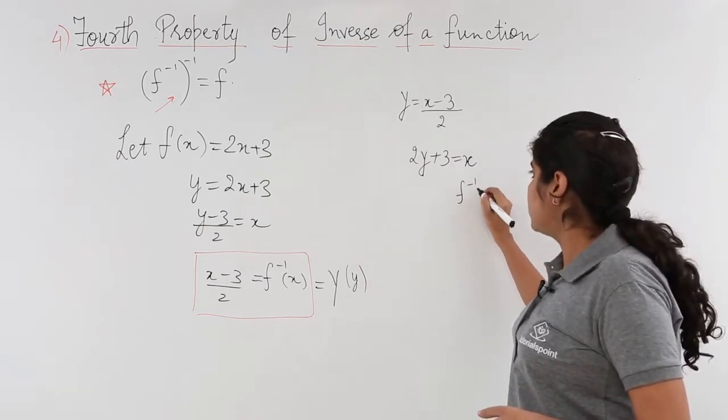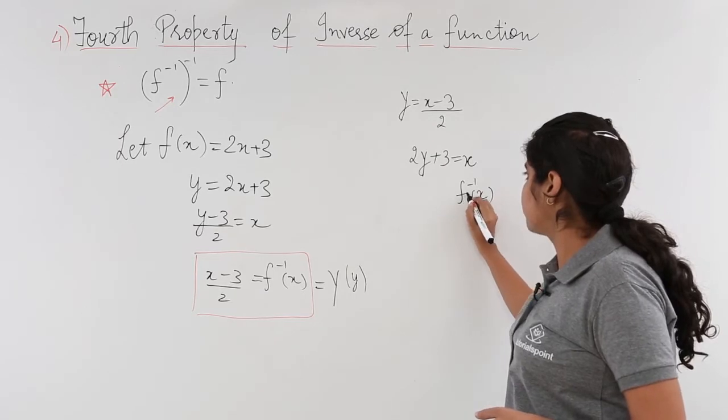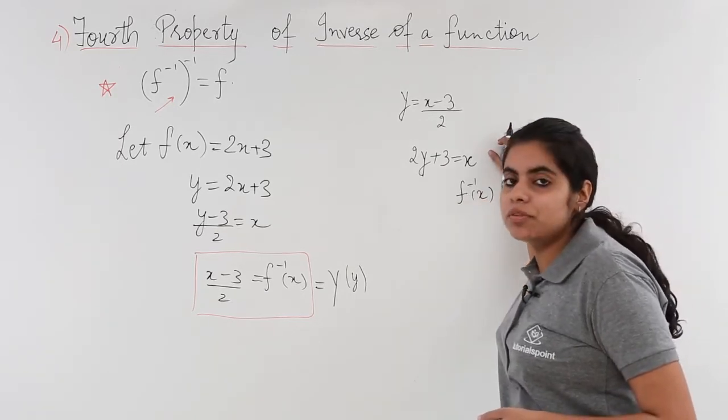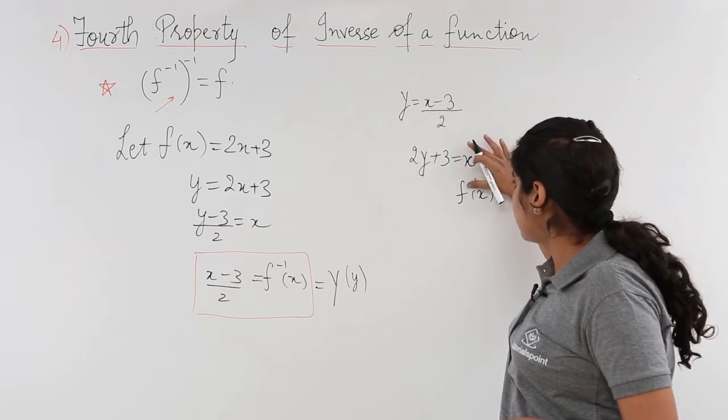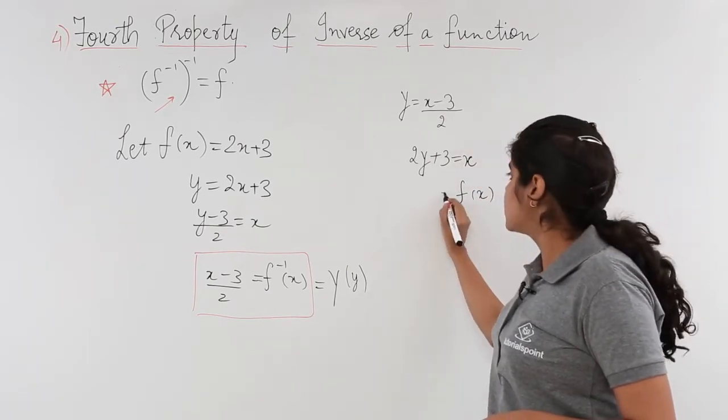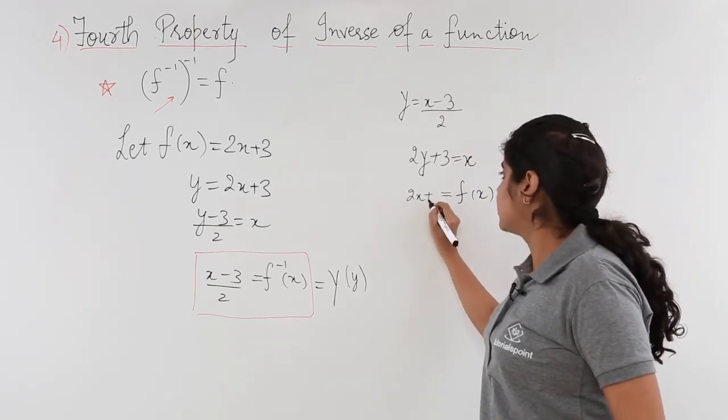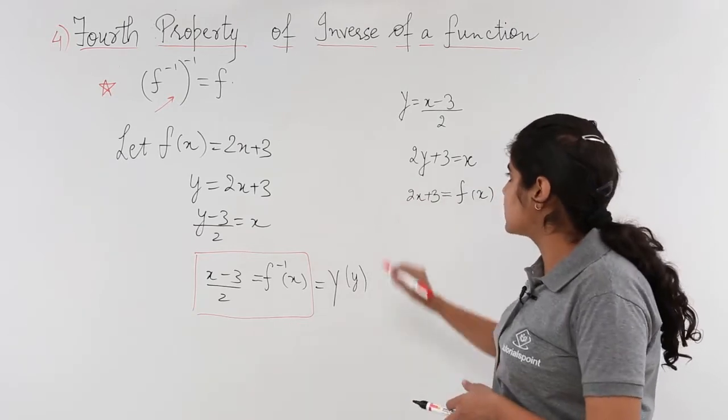That means f inverse inverse of x, which is the double inverse, gives me f(x) = 2x + 3, and hence the result.